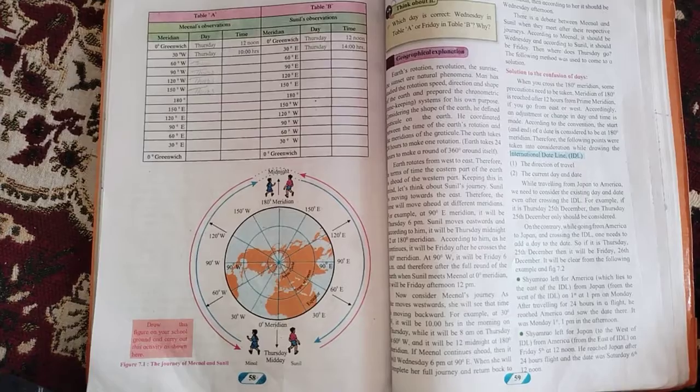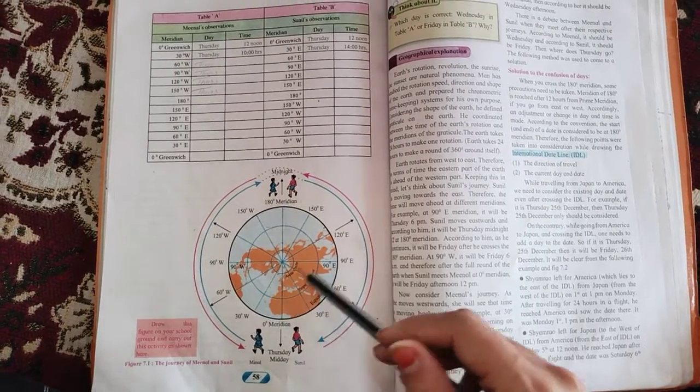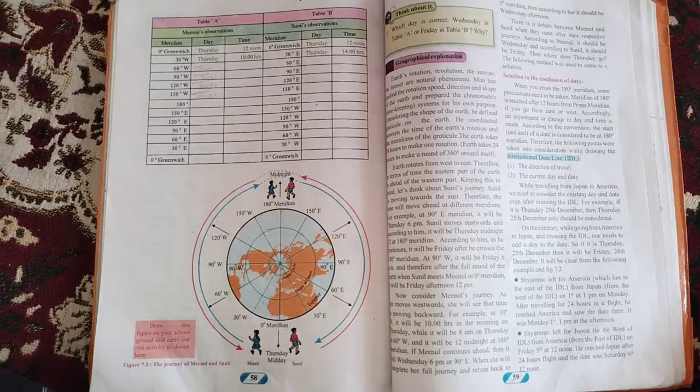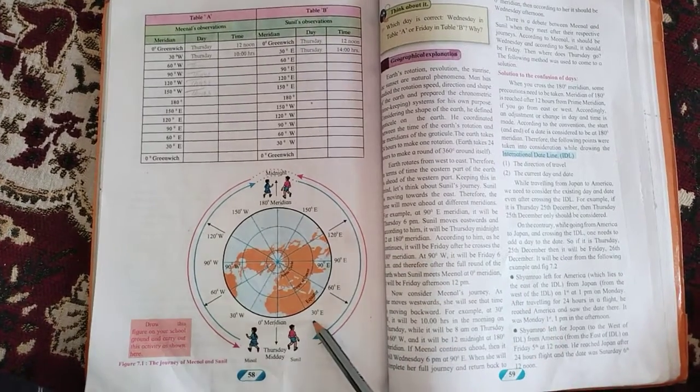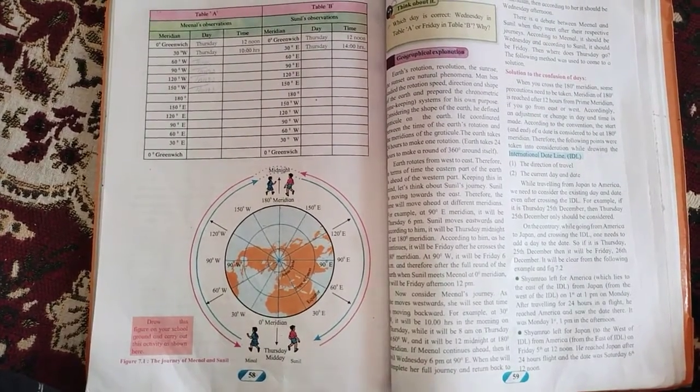Earth rotates toward the east, hence the places in the east are always ahead than the places in the west. When it is noon on the prime meridian, for example,